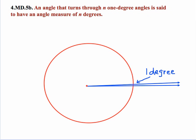Let's look at part B. An angle that turns through n one degree angles is said to have an angle measure of n degrees.